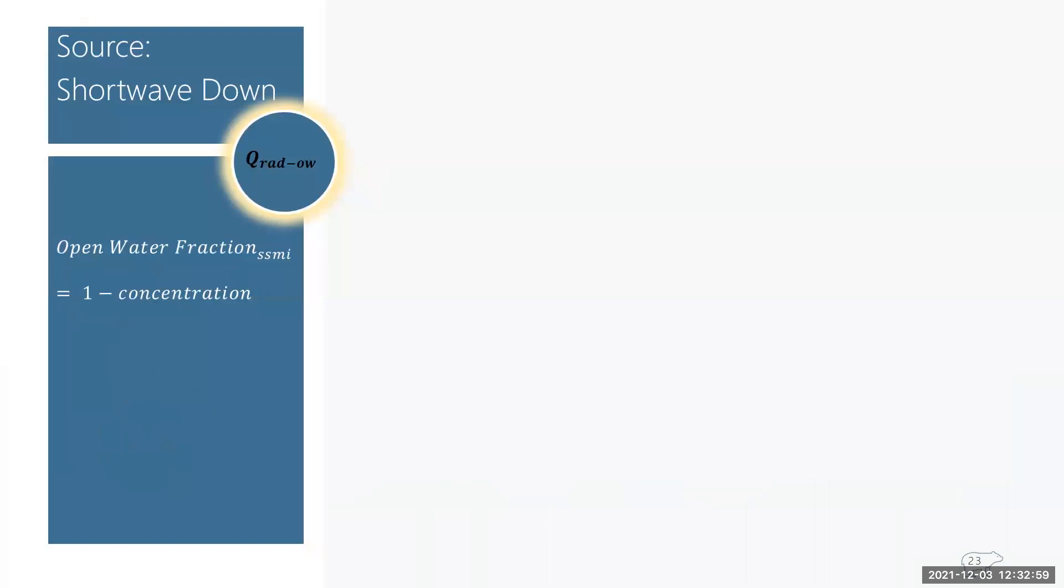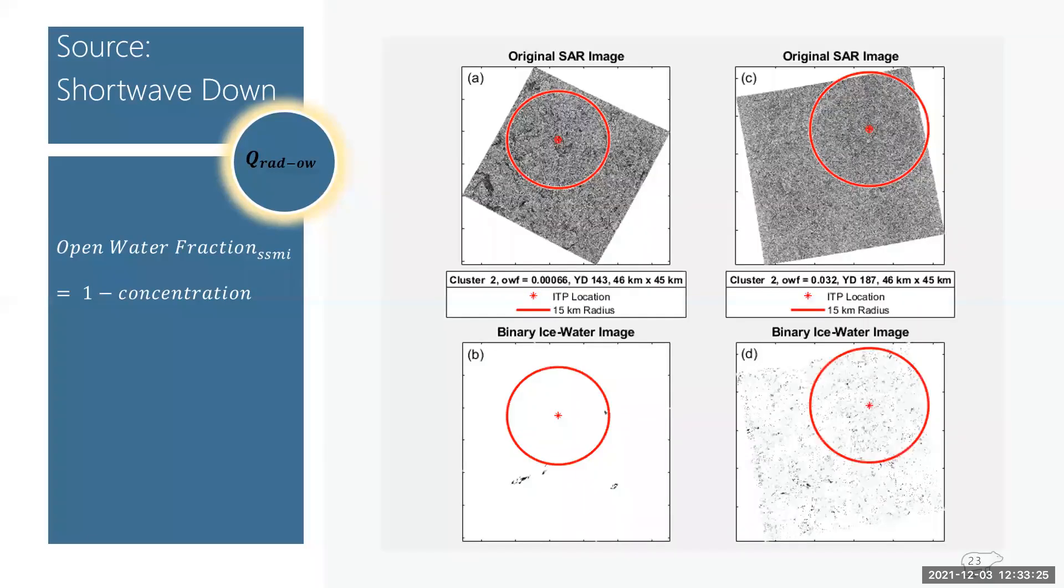And so you'll see these sign conventions later in the figures when I show seasonal values for each of them. So before I get into how much sunlight gets in through open water, I want to briefly share how I got open water fraction from both concentration sources. So first SSMI data was downloaded as ice concentration for a 25 kilometer area. So to get open water fraction, I simply took one minus that concentration. But SAR took a little bit more work.